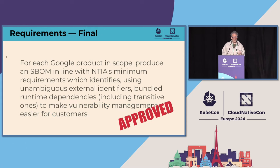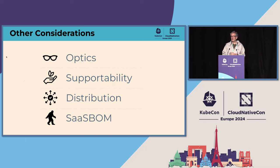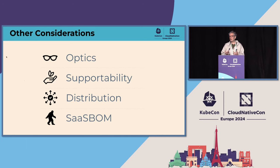At this point we're done — a 12 or 13 page version of this statement became the requirements doc for SBOMs at Google in service of the EO. But there are a few other considerations — I'll talk a little about SASBOMs later in the talk. You need to think about non-functional requirements for how these SBOMs are going to meet the world, how you're going to support them, and what they're going to look like when they're outside.